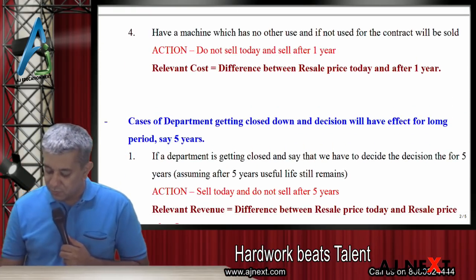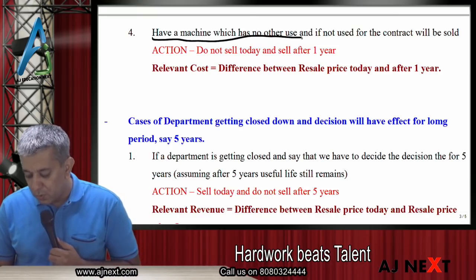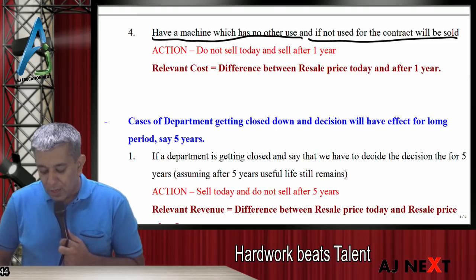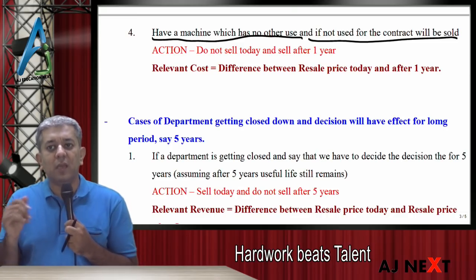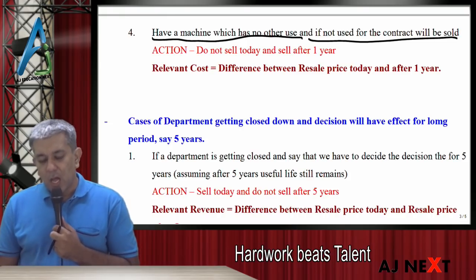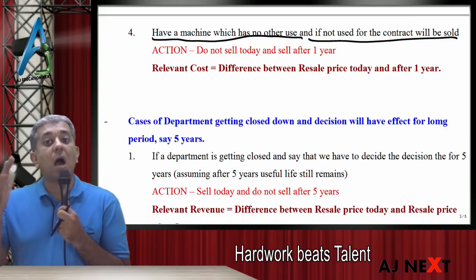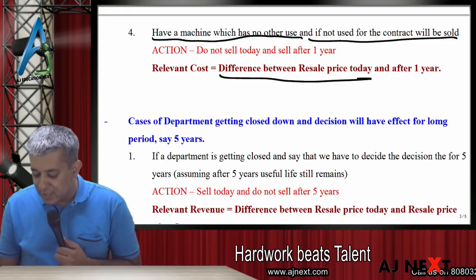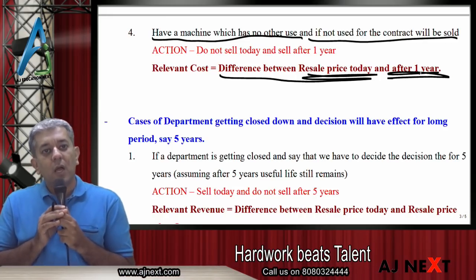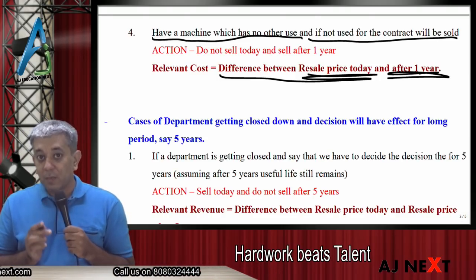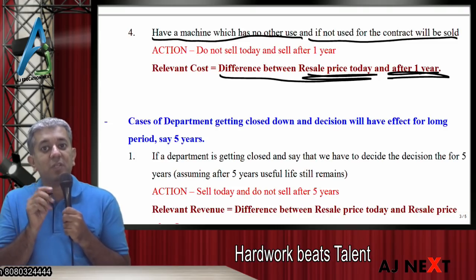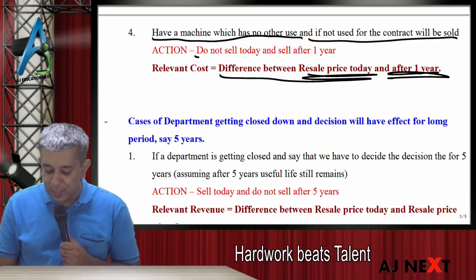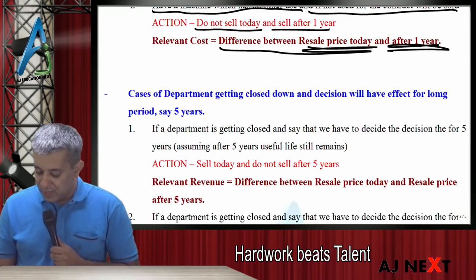Case 4: Have a machine which has got no other use, and if not used for the contract, will be sold. Tumhare paas ek koi machine hai, uska kuch use nahi hai. Agar ye wala offer nahi aata, aaj tum machine ko bech dete. Agar aaj machine ko bech dete, toh itna mil jata. Aaj mat becho, ek saal tak offer ke liye use kar lo, ek saal ke baad bech dena. Relevant cost = difference between resale price today and resale price after one year. Note: agar machine ka life hi ek saal ka baaki hai, toh after one year, instead of resale value, it will be scrap value. Action: do not sell today, but sell after one year.